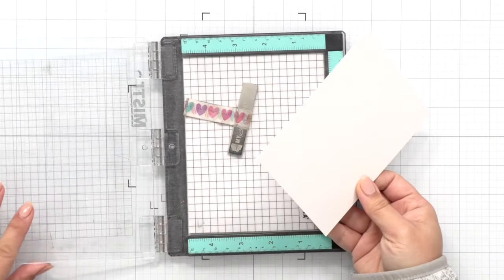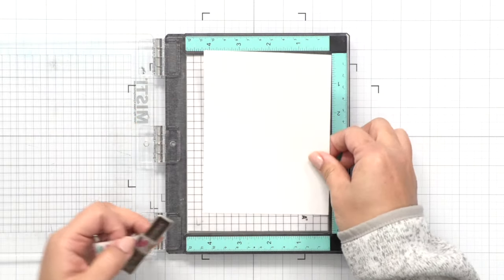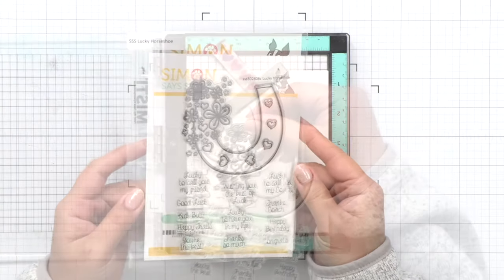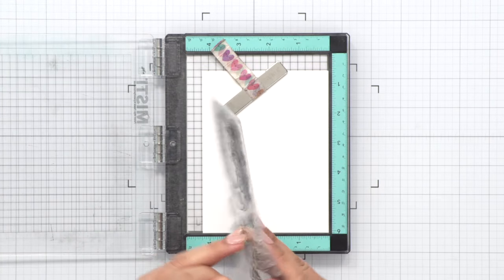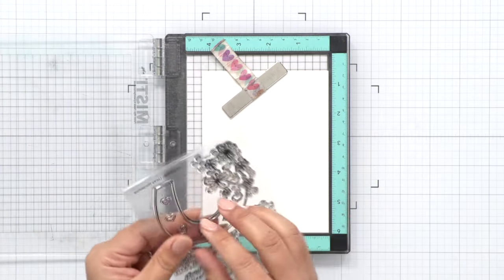So I cleaned my surface as quickly as I could to make sure that paste wipes off easily. I've set my panel aside to dry and we're going to stamp this image from the Lucky Horseshoe set.